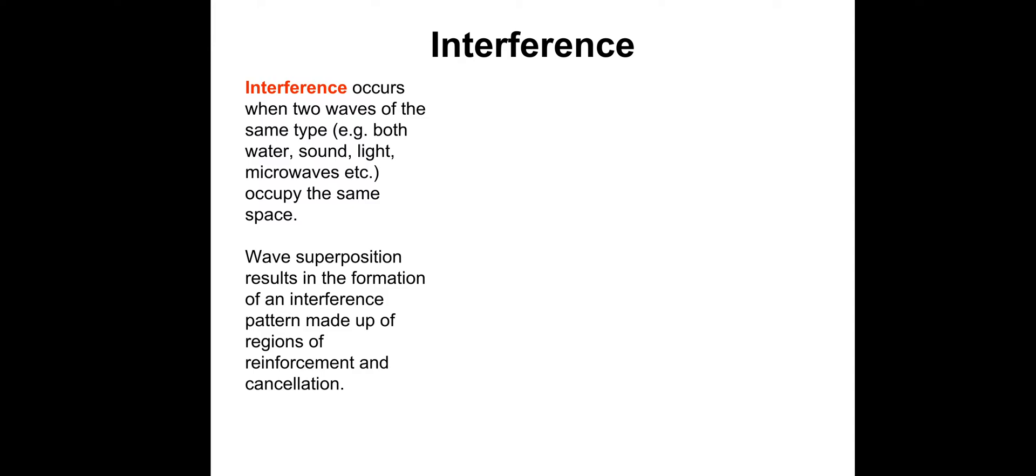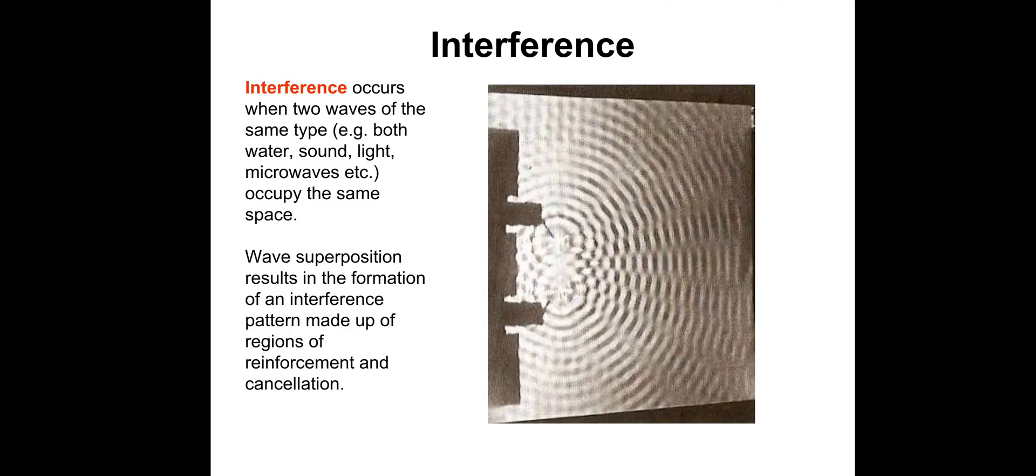And wave superposition results in the formation of an interference pattern made up of regions of reinforcement and cancellation. If you've done standing waves, this is the reinforcement and cancellation is the anti-nodes and the nodes, respectively. So here's an example of two-point sources in a ripple tank undergoing superposition. And we end up with regions of reinforcement and regions of cancellation.